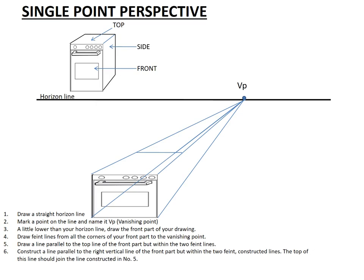You do remember this line that was constructed in number five. It says this line must be parallel to this right vertical line, but it must be within the two faint lines that are projected to the vanishing point, and the top of it must touch this previously drawn line in number five. Let's check the line. There it goes, exactly as it was required.